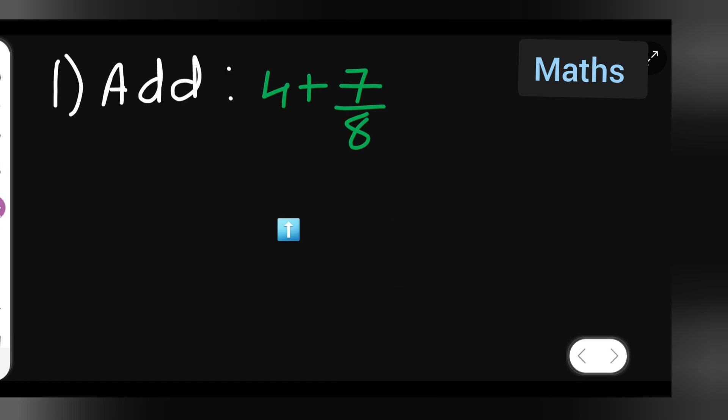First you all can take down the question that is add 4 plus 7 upon 8. Now what we are going to do first step will be write down this 4 as a fraction.